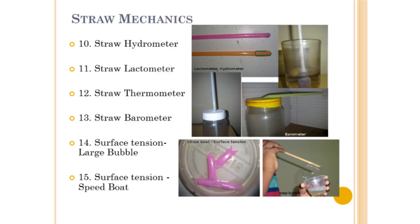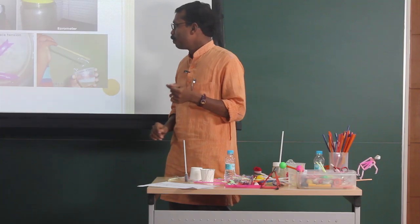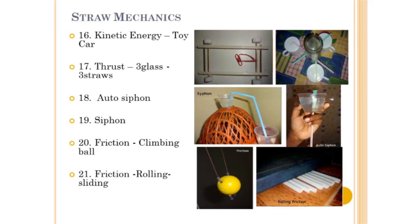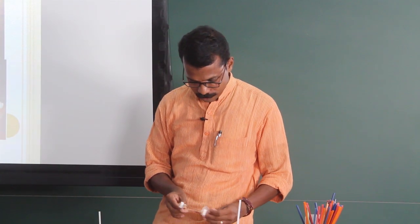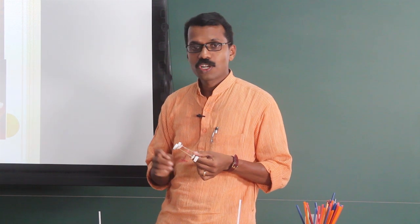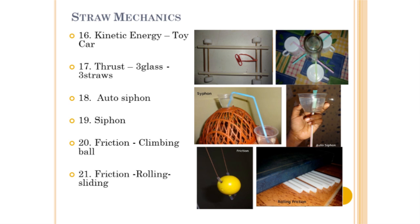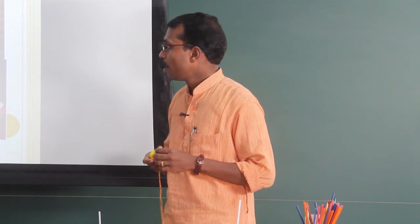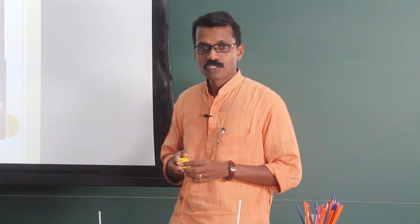For surface tension, we can create different types of soap bubbles, and their size depends on the cutting of the straw. There is also a straw boat: a straw cut and sealed at one end will move just like a boat. Then for kinetic and potential energy, there is a toy cart that demonstrates the conversion between potential and kinetic energy. Thrust can be shown using three straws to hold a glass. There is also an ordinary siphon and auto siphon, and with two straws and a thread we can show a climbing ball, plus rolling friction with a set of straws.